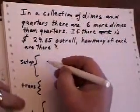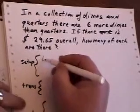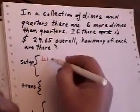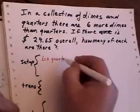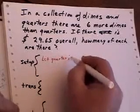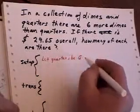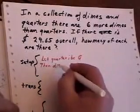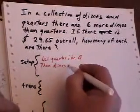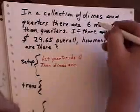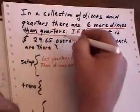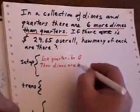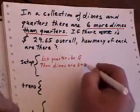The first way is you can say let quarters be Q, then dimes are, it says here there are six more dimes than quarters, so six more than the quarters.